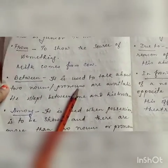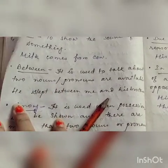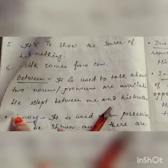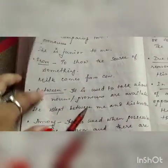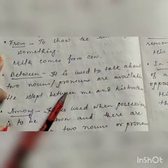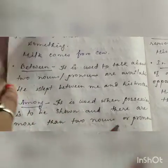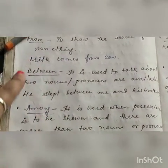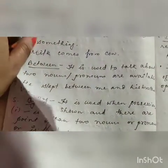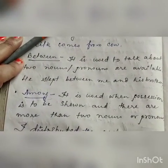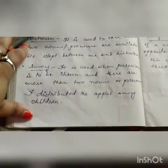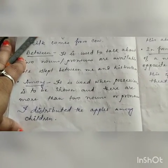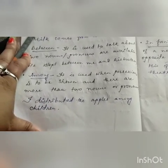Next, 'between' — it is used to talk about two nouns or pronouns when both are available. For example: 'He slept between me and his brother' — there are two people, both available. 'Among' is slightly different — whenever you are talking about more than two nouns or pronouns, so many people, you use 'among'. It is used when position is to be shown and there are more than two nouns or pronouns. For example: 'I distributed the apples among children.'